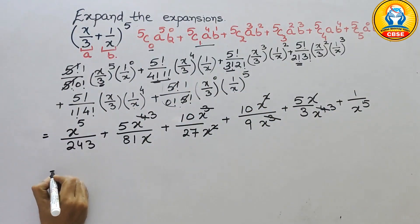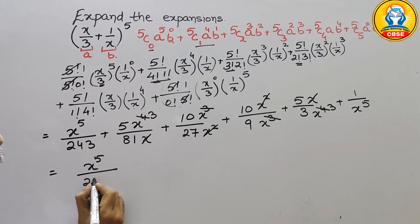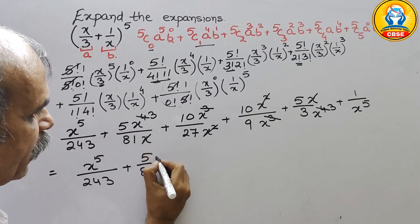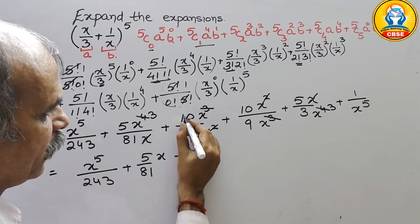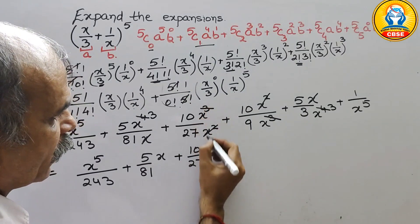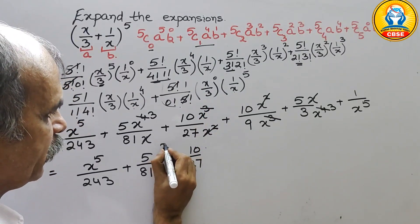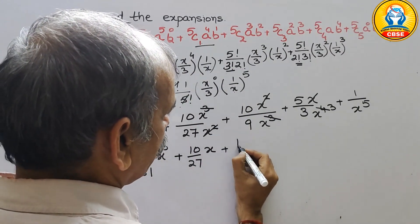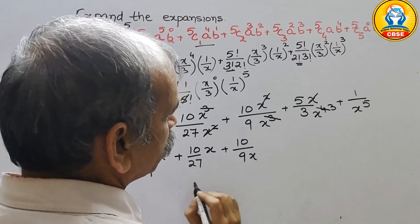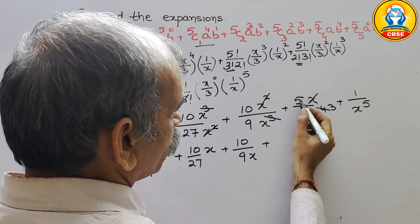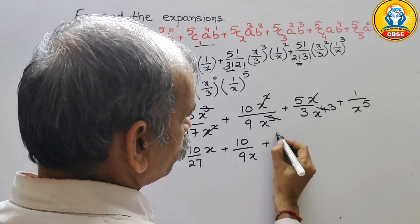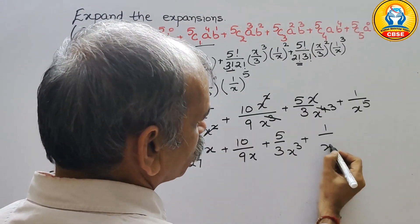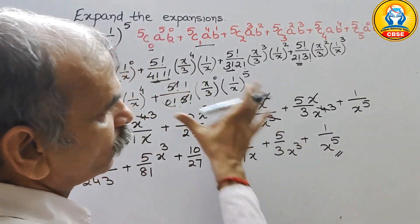So the final answer is: x to the power of 5 divided by 243, plus 5x cubed divided by 81, plus 10x divided by 27, plus 10 divided by 9x, plus 5 divided by 3x cubed, plus 1 divided by x to the power of 5. So this is your answer for this question.